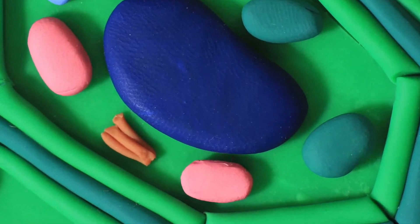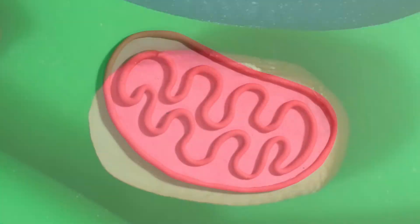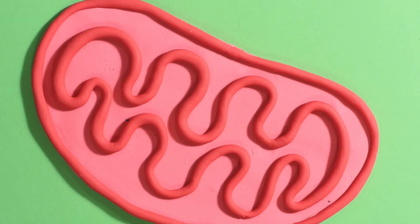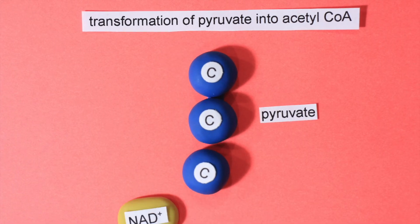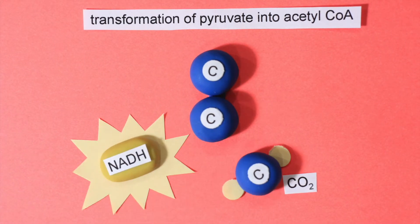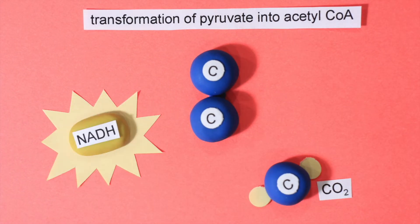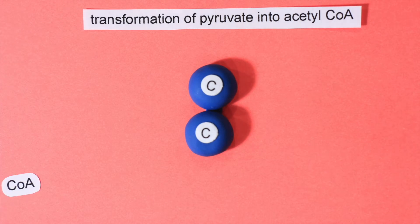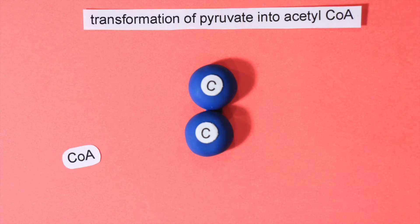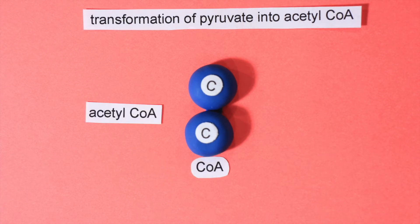Now let's look at a mitochondrion. Inside the matrix, one pyruvate makes energy by losing a carbon atom that becomes carbon dioxide. The two leftover carbon atoms bond with coenzyme A and form acetyl coenzyme A.